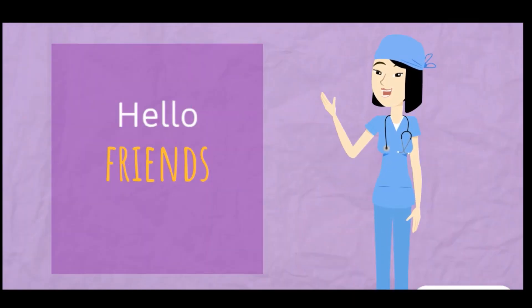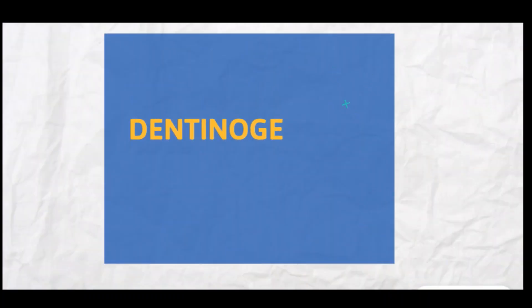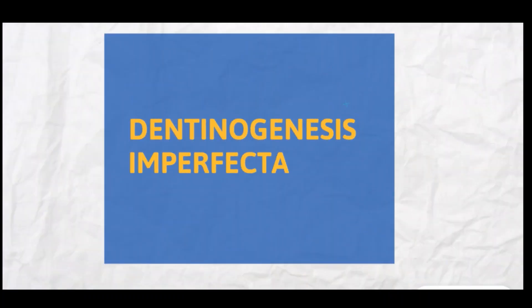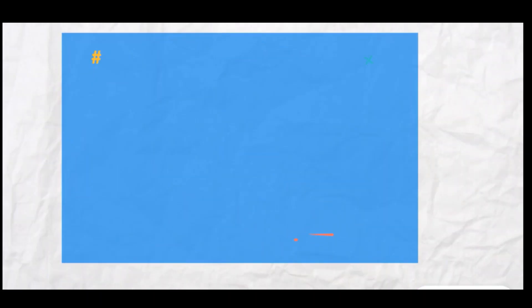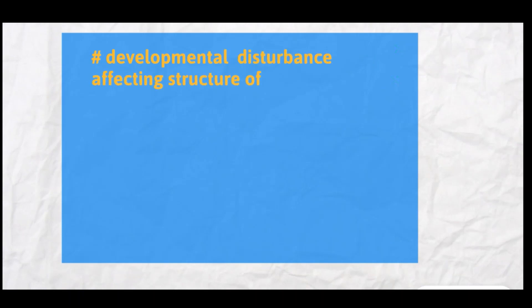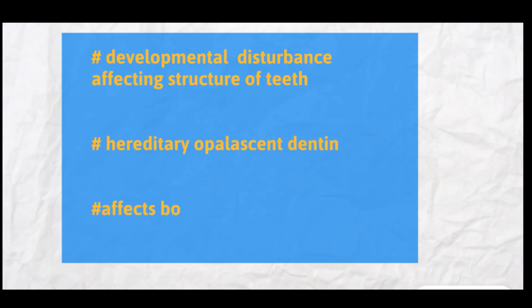In this video we will learn about dentinogenesis imperfecta. It is a developmental disturbance affecting the structure of teeth, also called hereditary opalescent dentine, and it affects both primary and permanent dentition.